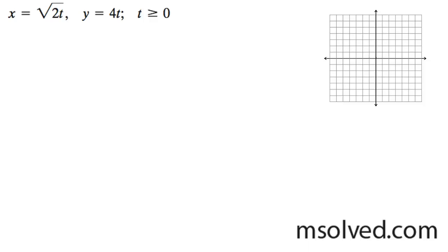So plug in 0, we get 0, 0, so the point of origin. Plug in 1, we get the square root of 2, right about here, gives us 4.